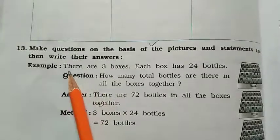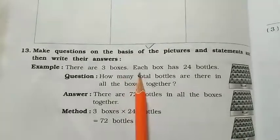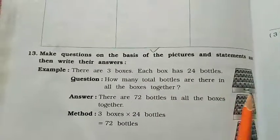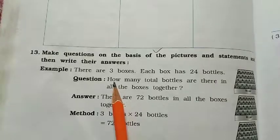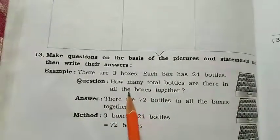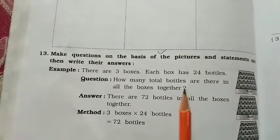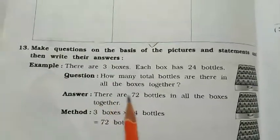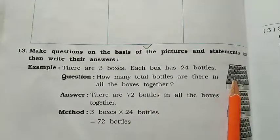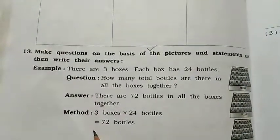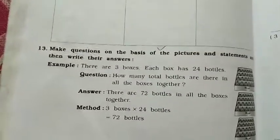Example: There are three boxes. You can see in the picture. Each box has 24 bottles. Question: How many total bottles are there in all the boxes together? Answer: There are 72 bottles in all the boxes together. Method: 3 boxes × 24 bottles = 72 bottles. Understand? This was the example question.